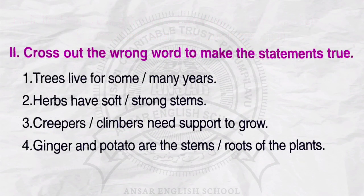Exercise number 2. Cross out the wrong word to make the statements true. Number 1. Trees live for some or many years — cross the word 'some.' Number 2. Herbs have soft or strong stems — cross the word 'strong.'